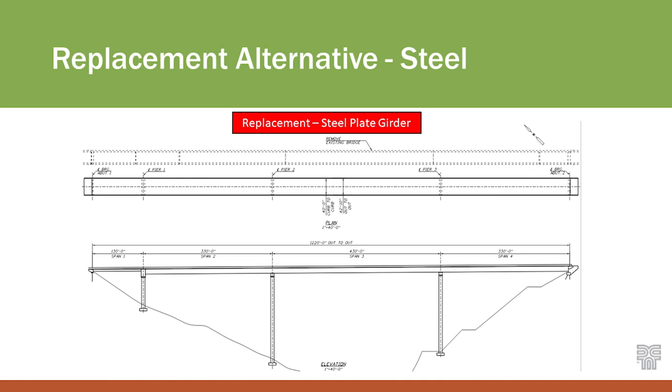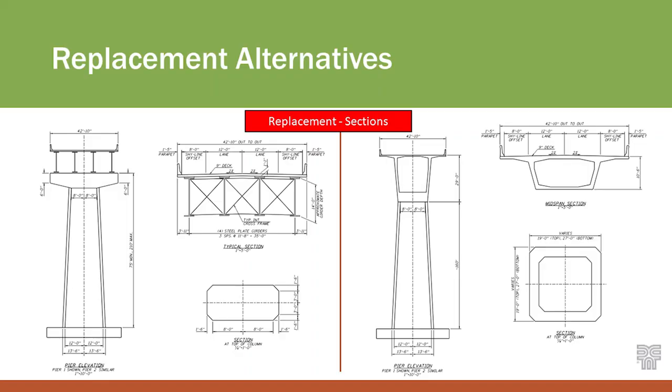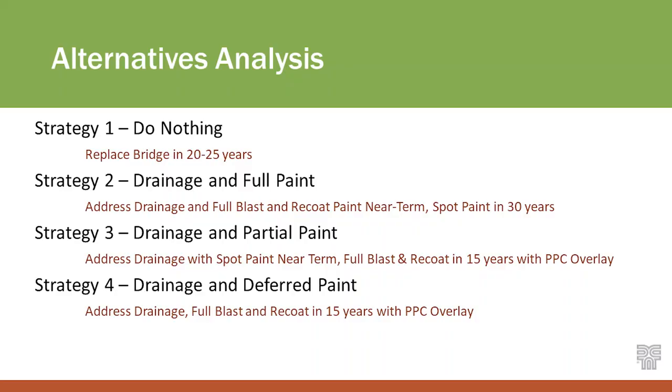For replacement, we looked at two options: one was a steel plate girder with a 430-foot main span and 330-foot end spans. The second option was a cast-in-place segmental structure with a 530-foot main span and 345-foot end spans. These are just concepts to get a ballpark cost of what it would cost to replace the bridge so we can plug that into the plan. Notably, the pier height is between 160 and 200 feet high — it's a major structure and expensive to replace.